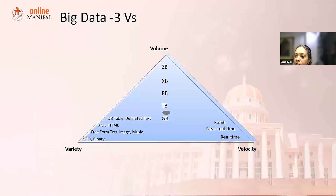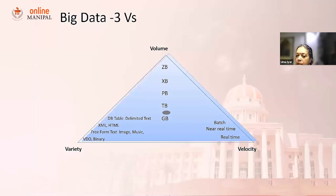In terms of velocity, velocity is the speed at which the data is coming in and the processing required. Initially it was batched and near real time, and now real time. That's how big data is being processed.